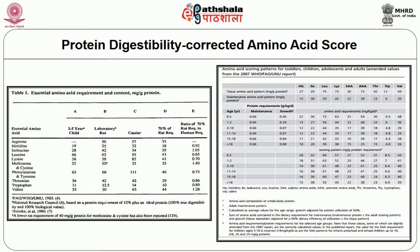Looking at the essential amino acids — arginine, histidine, isoleucine, leucine, lysine, methionine, cysteine, phenylalanine, tyrosine, threonine, tryptophan, valine — requirements have been given for pre-school children aged 2 to 5 years, along with the equivalent for laboratory rats and casein protein composition. The ratio of 70 percent of rat requirements to human requirements has been shown. The FAO/WHO/UNU has given essential amino acid requirements for pre-school children, and scoring patterns for toddlers, children, adolescents, and adults from the amended 2007 WHO/FAO/UNU report are also available for all age groups including adults above 18 years.